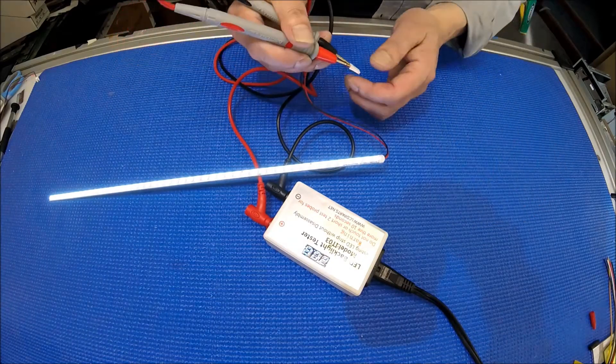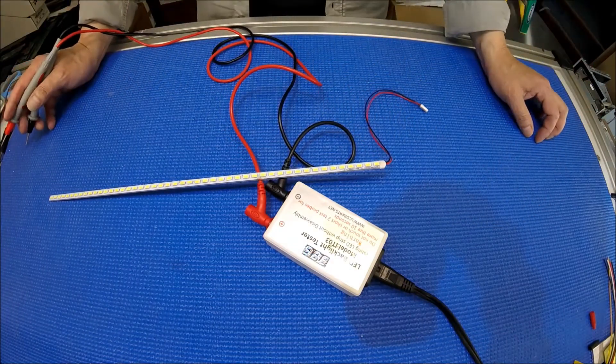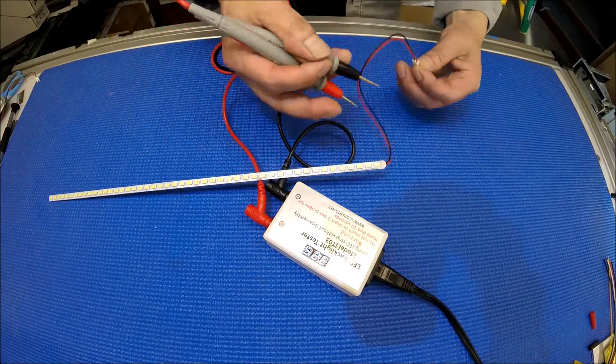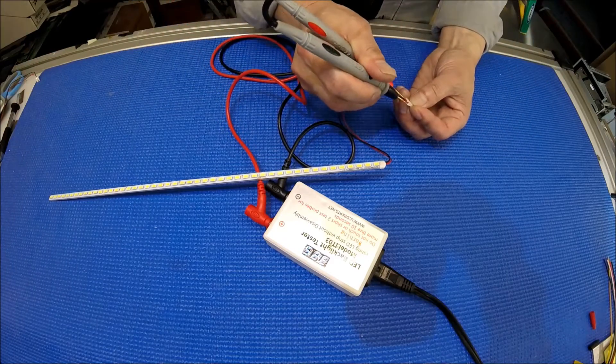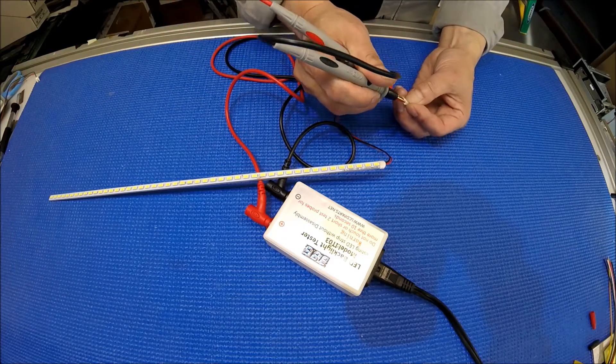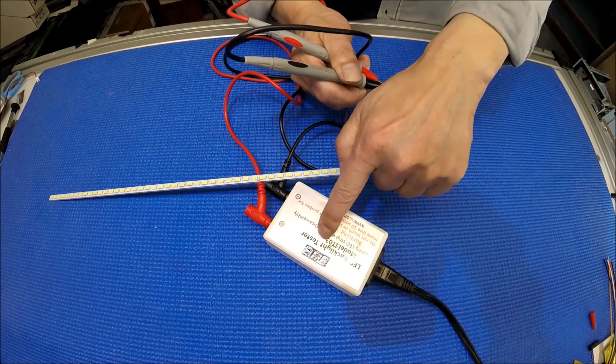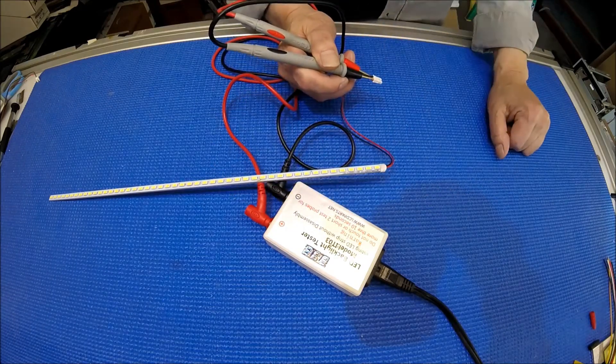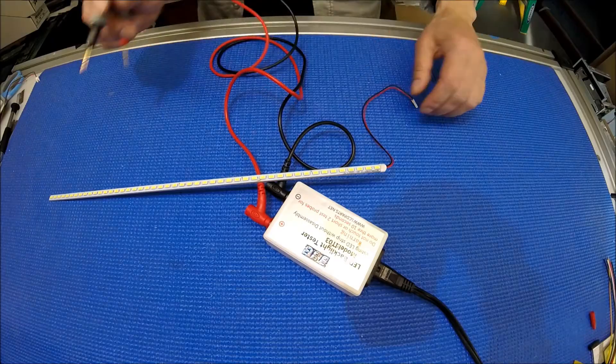If you do the opposite and connect cathode to anode, the voltage won't change and the LED won't light up. So it's quite easy to tell. Now I'll shut it off.